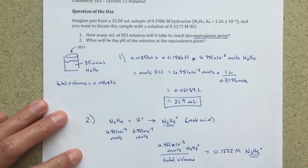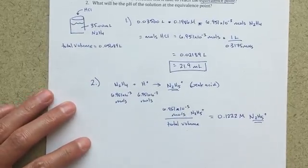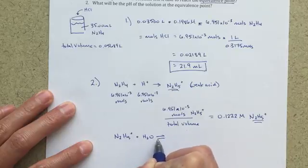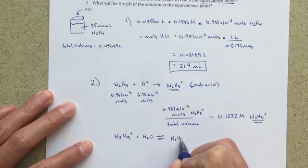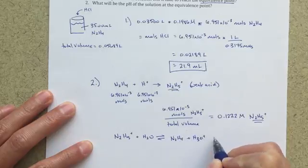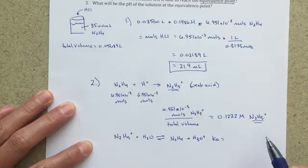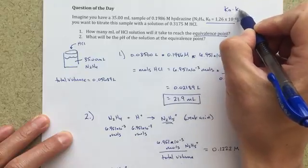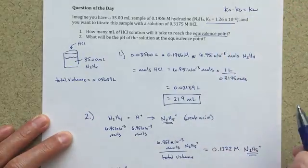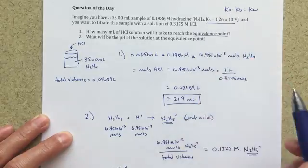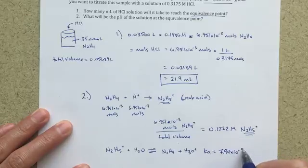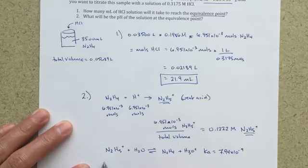So if I want to find the pH for this weak acid, then it just becomes a normal Ka type problem. I could write out N2H5+ plus water, it's going to give me N2H4 plus H3O+. Ka is going to equal, we're going to need to calculate that, up here we're given the Kb, and I know that Ka times Kb is equal to Kw, so I can use that information to solve for the Ka using this Kb that's been given. If I do that, I get a value of 7.94 times 10 to the minus ninth. And now I've got my initial molarity here, 0.1222 molar.